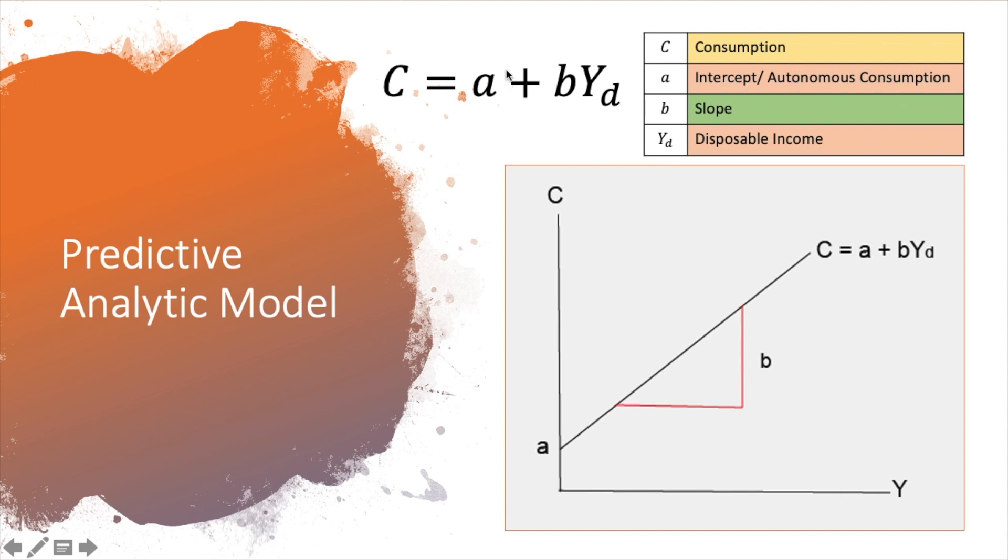Now what do we mean by autonomous consumption specifically for the case of a consumption function? Autonomous consumption is the consumption that a consumer will incur whether he or she have any income. And usually autonomous consumption is incurred via either taking out money from their savings or borrowing money from their friends.